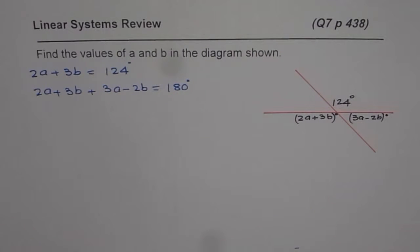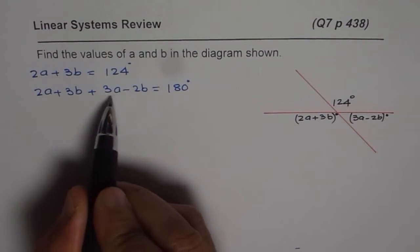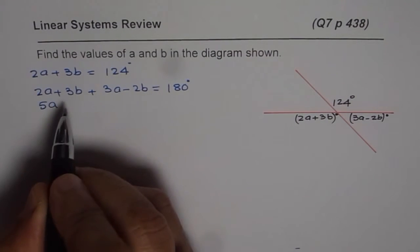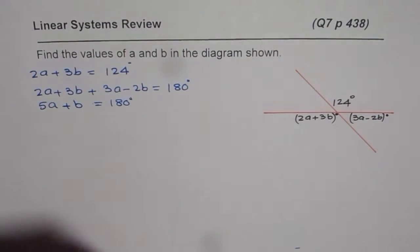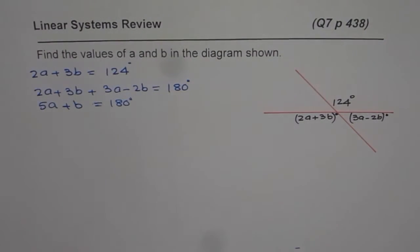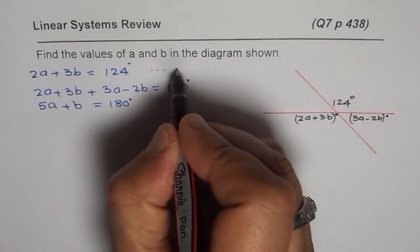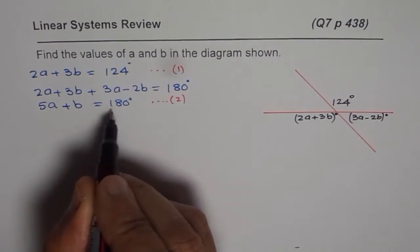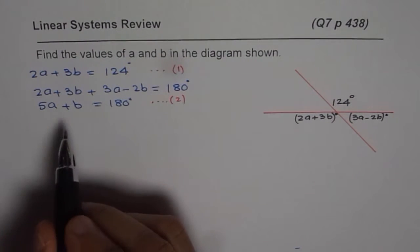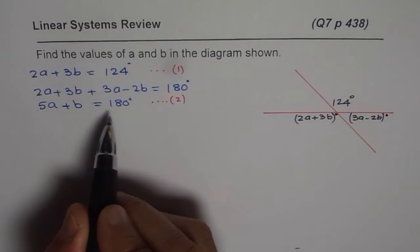We are on the second equation. Now, let us simplify the second equation which is 2A plus 3A is 5A. We can write this as 5A. 3B minus 2B is just B equals to 180 degrees. So as you can see, we have two equations now. Simplified which one is 2A plus 3B equals to 124. The other one is 5A plus B equals to 180. Now, we can actually do elimination or substitution either of those methods to solve this equation.